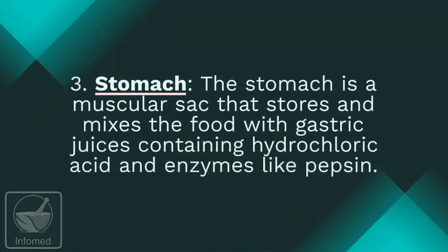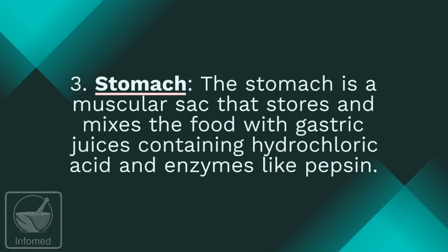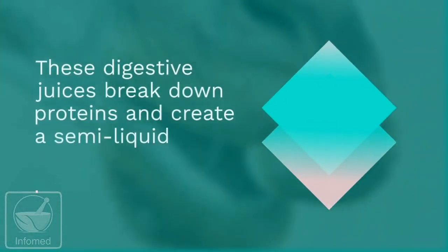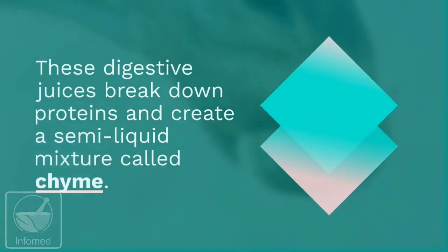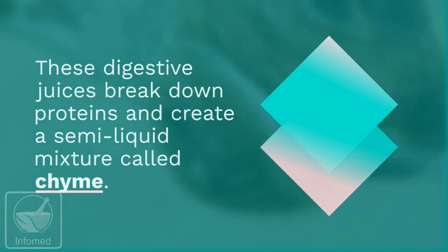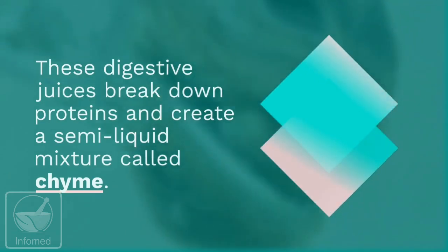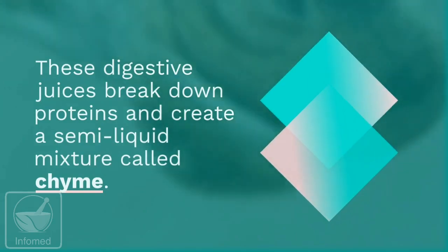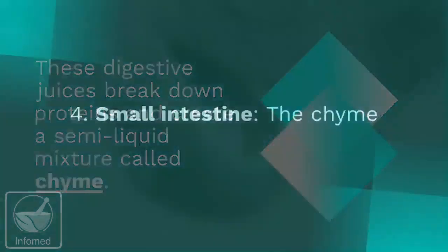Number three: the stomach. The stomach is a muscular sac that stores and mixes food with gastric juices containing hydrochloric acid and enzymes like pepsin. These digestive juices break down proteins and create a semi-liquid mixture called chyme.